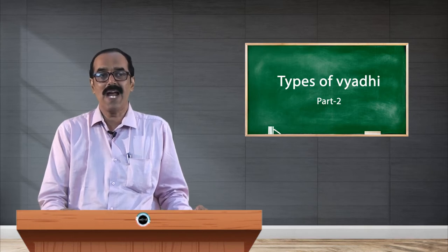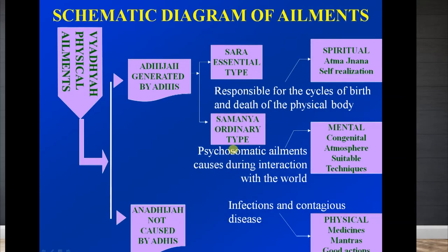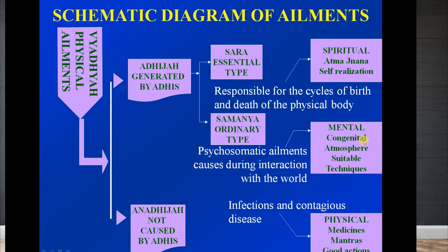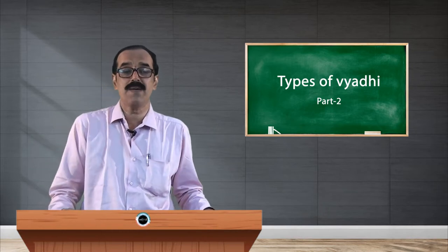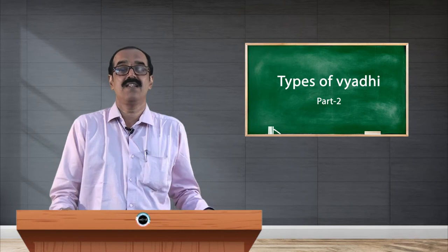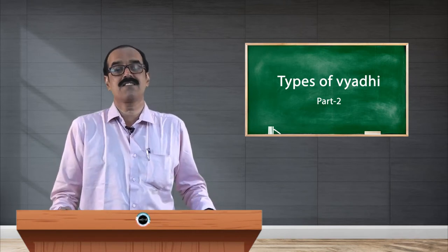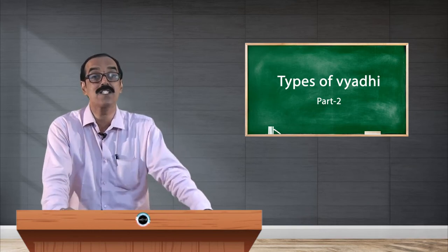So what is the solution? In a schematic diagram we can explain the elements. For Sara type of Vyadhi, we cannot do anything about our birth — it has already taken place. But we can go for further realization through Atma Jnana — self-realizing who I am — so that all our karmas and actions are purified and further samskaras are not developed. For Samanya type, the technique is at the mental level: creating a congenial atmosphere internally and externally, selecting a suitable technique, and eliminating the cause of the disease, which is Adhi — removing our ignorance.